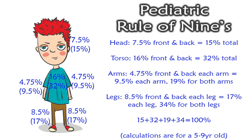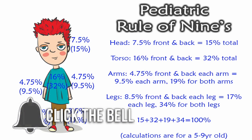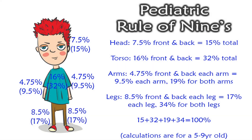For the pediatric patient (5–9 years old): the head is 7.5% for the front and 7.5% for the back, totaling 15% for the entire head. The torso is 16% for the front, 16% for the back, for a total of 32%. The arms are 4.75% for the front and 4.75% for the back of each arm, that's 9.5% per arm, and both arms together is 19%. The legs are 8.5% front and 8.5% back of each leg, totaling 17% per leg, and both legs together is 34%. When you add these together — 15 plus 32 plus 19 plus 34 — it equals 100%.